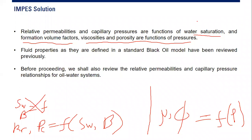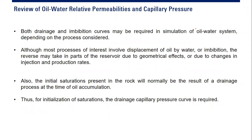Now we review oil-water relative permeabilities and capillary pressure. Both drainage and imbibition curves may be required in simulation of an oil-water system, depending on the process considered. Although most processes of interest involve displacement of oil by water — called imbibition — the reverse, drainage, may also take place in parts of the reservoir due to geometrical effects or changes in injection and production.